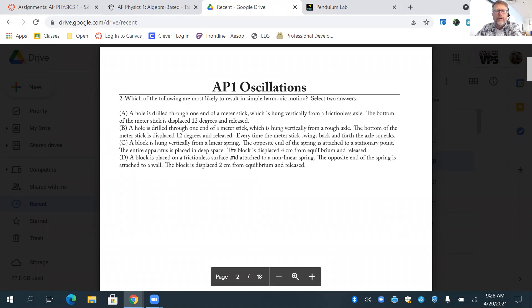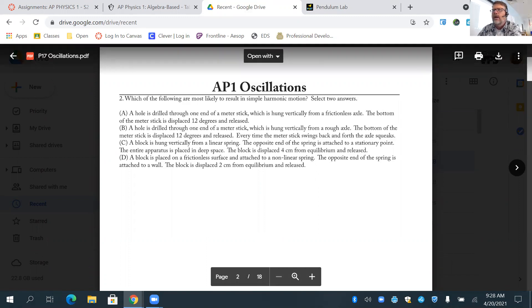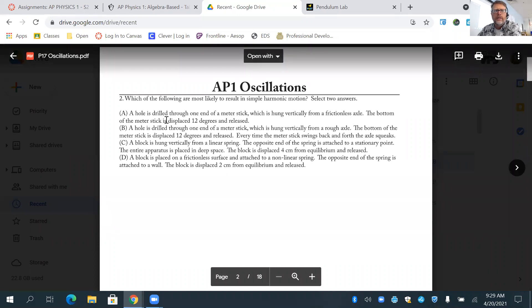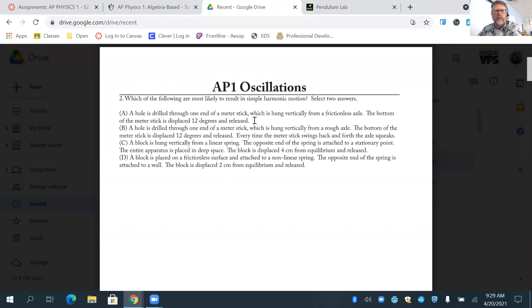All right, the next question: which of the following are most likely to result in simple harmonic motion? Select two answers. So a hole is drilled through the one end of a stick, which is hung on frictionless axle. The bottom of the meter stick is displaced 12 degrees and released. Yes, so this is a simple harmonic oscillator. You're using the mass of the stick as your pendulum, and you're creating a pendulum simple harmonic oscillator.